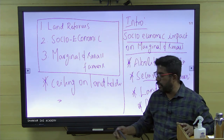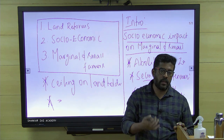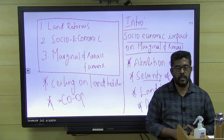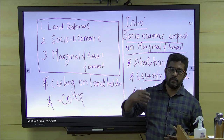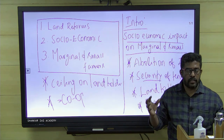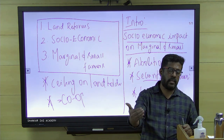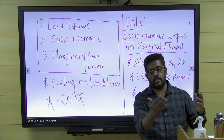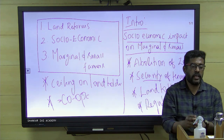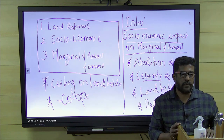The next point is consolidation of land holdings or cooperative farming, which was one of the exercises under land reforms. Land reforms enabled cooperative farming among the farmers, which gave them more marketable access — they could come together, access the market collectively, and do agriculture collectively. While doing it in that manner, they were able to improve their socio-economic conditions. Take cooperative farming or consolidation of land holdings and connect it with socio-economic conditions.